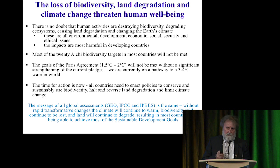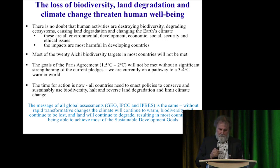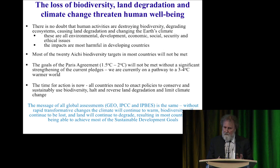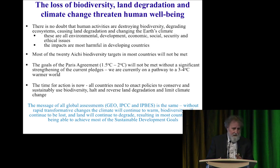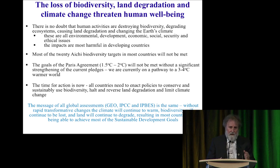These issues are fundamental to human wellbeing, whether in a rich country or a poor country. Unfortunately, most of the problems are being caused by the rich countries and the people most adversely impacted are poor people in developing countries. The 20 biodiversity Aichi targets will not be met by most countries. The 1.5 to 2 degree target of the Paris Agreement will not be met with current pledges. The time for action is clearly now — in fact, the time for action was 10, 20, and 30 years ago.